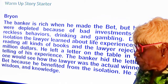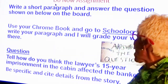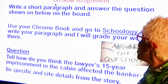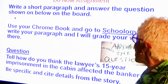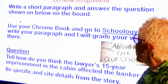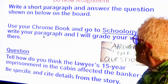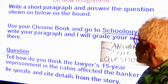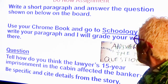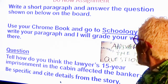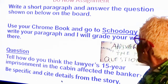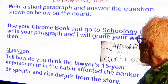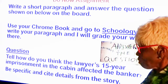To add to our story starter assignment, we have a Do Now assignment. You will write a short paragraph and answer the question shown below. Use your Chromebooks and go to School of Technology to write your paragraph, and I will grade your work there. The question you're going to answer is: tell how do you think the lawyer's 15-year imprisonment in the cabinet affected the banker? Be specific and cite details from the story. I'll be looking forward to seeing your answer to this question.